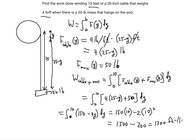Remember that the force is in pounds and the distance is in feet, and work is calculated by multiplying force and distance. Since we already found the force functions, we use the integral formula where dy represents the distance. We've calculated the total work required winding 10 feet of a 25-foot cable that weighs 4 pounds per foot when there's also a 50-pound mass on the end. I hope this was helpful — please subscribe and I'll see you in my next video.